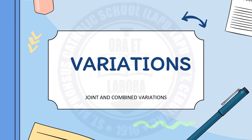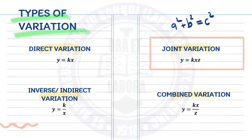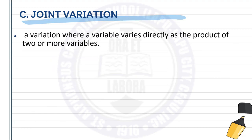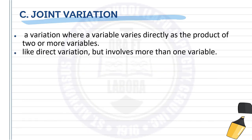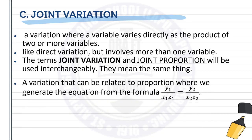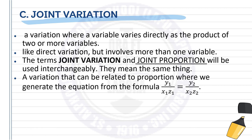This time we want to deal with joint and combined variations. Let's focus first with joint variation. Joint variation is a variation where a variable varies directly as the product of two or more variables. It is similar to direct variation but involves more than one variable. Joint variation and joint proportion are the same — a variation related to proportion where we generate the equation from the formula y₁ over x₁z₁ equals y₂ over x₂z₂.